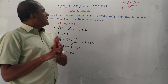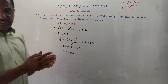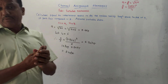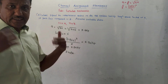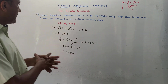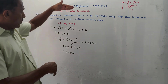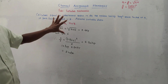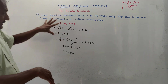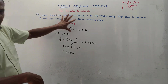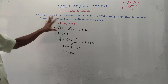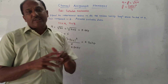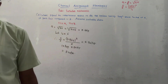To summarize, I have covered channel assignment strategies and the types of interference — co-channel interference and adjacent channel interference. A numerical was also solved to illustrate the concept. That's it for today's session. Thank you for watching.